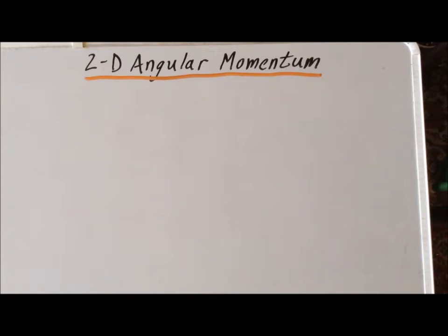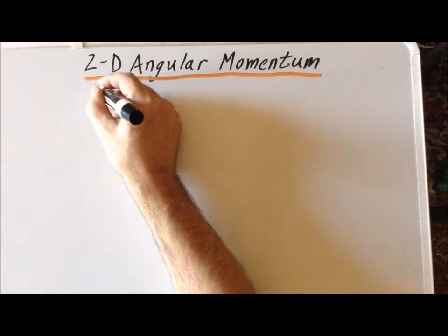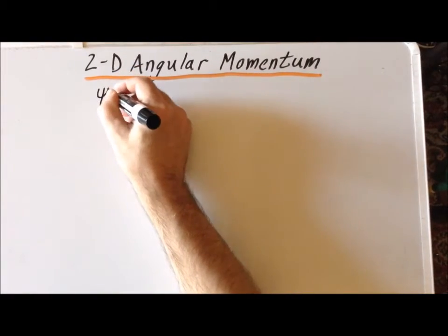We have thus determined that the angle phi and the overall two-dimensional angular momentum cannot be known simultaneously — those two operators do not commute. That may be a surprising result, so let's show another way to demonstrate the same point.